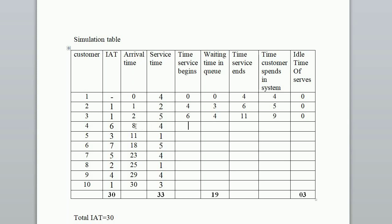For customer 4: arrival time is 8th minute, but the 3rd customer ends service at 11th minute, so service begins at 11th minute. Waiting time in queue is 11 minus 8 equals 3 minutes. Service time is 4 minutes, so time service ends at 11 plus 4 equals 15th minute. Time customer spends in system is 3 plus 4 equals 7 minutes. Idle time of server is 0.